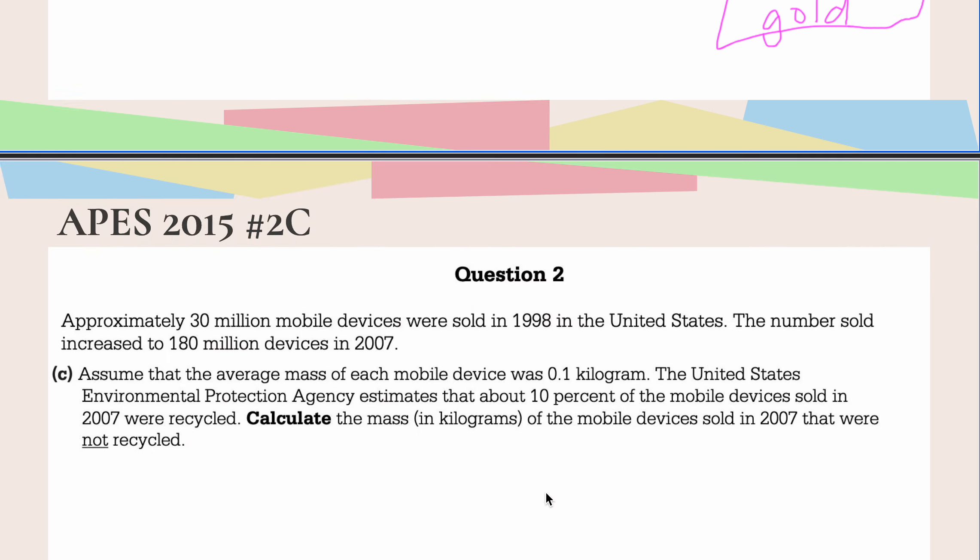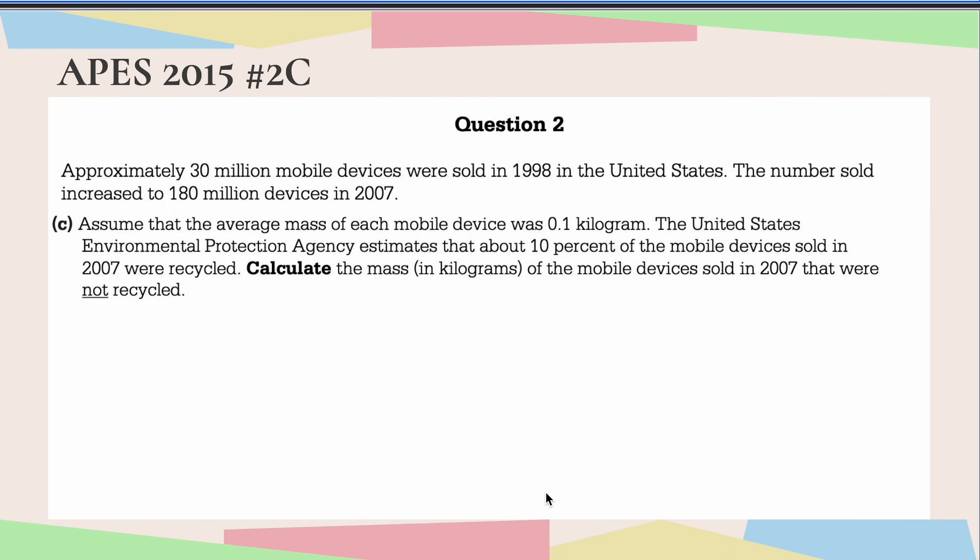Moving on to part C. Assume that the average mass of each mobile device was 0.1 kilograms. The United States EPA estimates that about 10% of the mobile devices sold in 2007 were recycled.